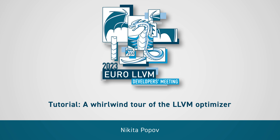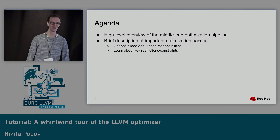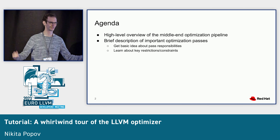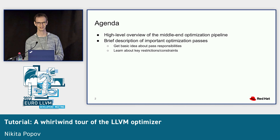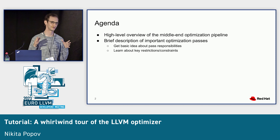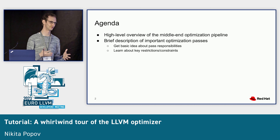This worldwide tour is going to have basically two parts. I'll start with a high-level overview of how the optimization pipeline in the middle end looks like — which different pipelines we have and how they are structured. Then in the second part, I'll move on to describing some of the more important optimization passes. We have a lot of optimization passes, so I'll only cover a very tiny part. The idea is that you get an idea of which pass is responsible for what, and also what some of the key restrictions on the passes are — so which things they are not responsible for.